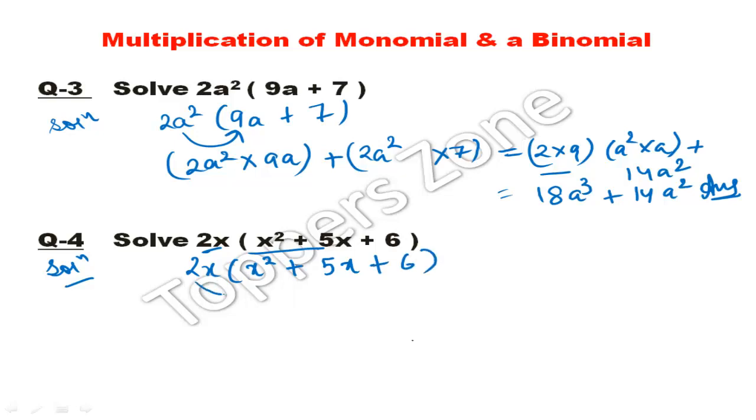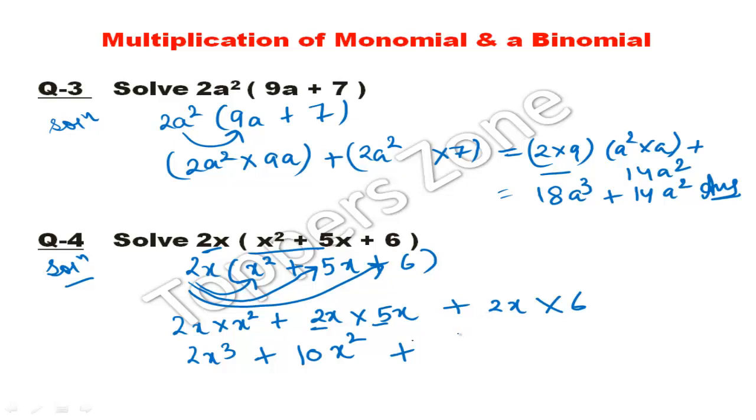We multiply each term. 2x into x² plus 2x into 5x plus 2x into 6. That's 2x³ plus 10x² (5 into 2 is 10, x²) plus 12x (2x into 6 is 12x).